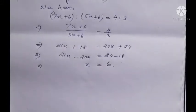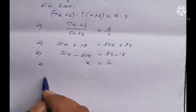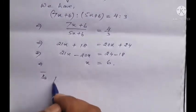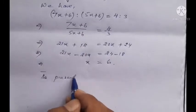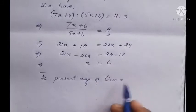Simplifying: 21x minus 20x equals 24 minus 18, so x equals 6.